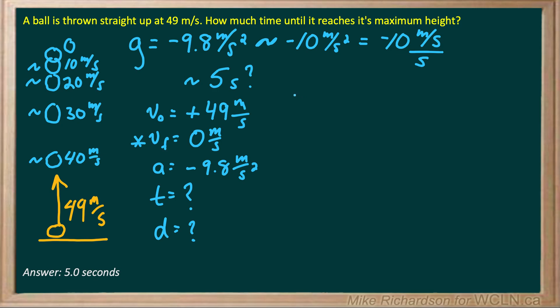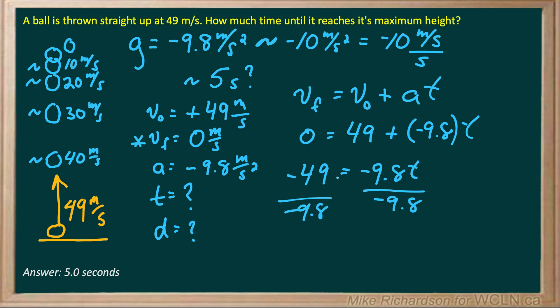If you look at your formula sheet, this one pops out, does not have displacement in it. V final is V initial plus A times T. V final is 0, V initial is positive 49, my acceleration was negative 9.8. If I subtract 49 from both sides, then divide both sides by negative 9.8, the negatives cancel and I get my 5 seconds.